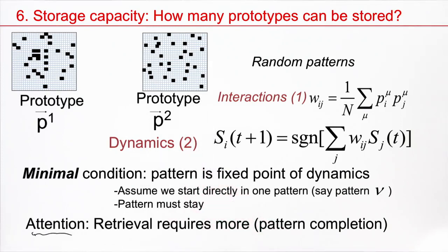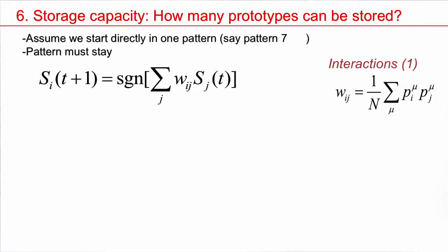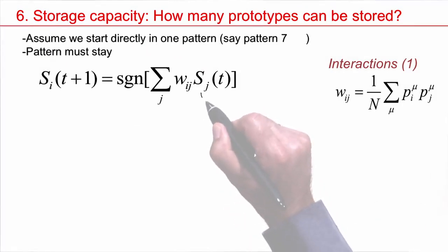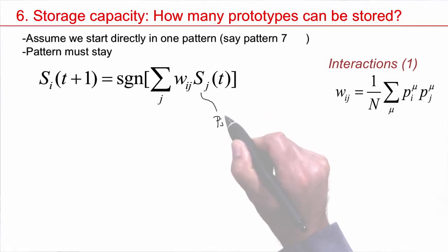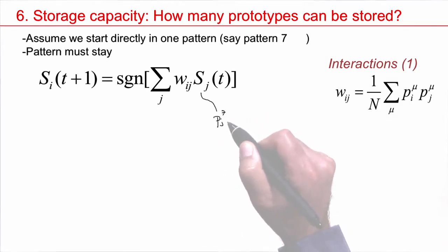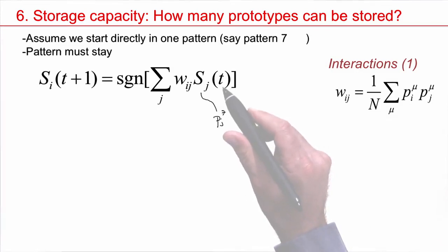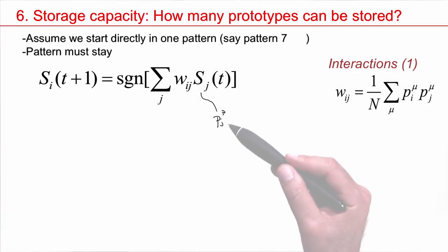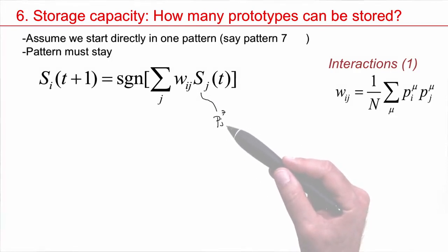Attention! Retrieval really requires more — we want pattern completion — but this is really a minimal condition. So let's look at this minimal condition and assume that we start directly in one of the patterns, say pattern number 7. This means that for each j, the value of s_j is equal to p_j of pattern 7. So at time t, each neuron is in the state that's consistent with pattern number 7.